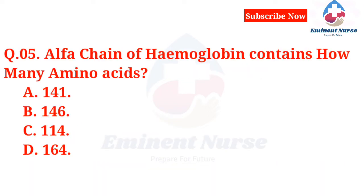Alpha chain of hemoglobin contains how many amino acids? A. 141. B. 146. C. 114. D. 164.